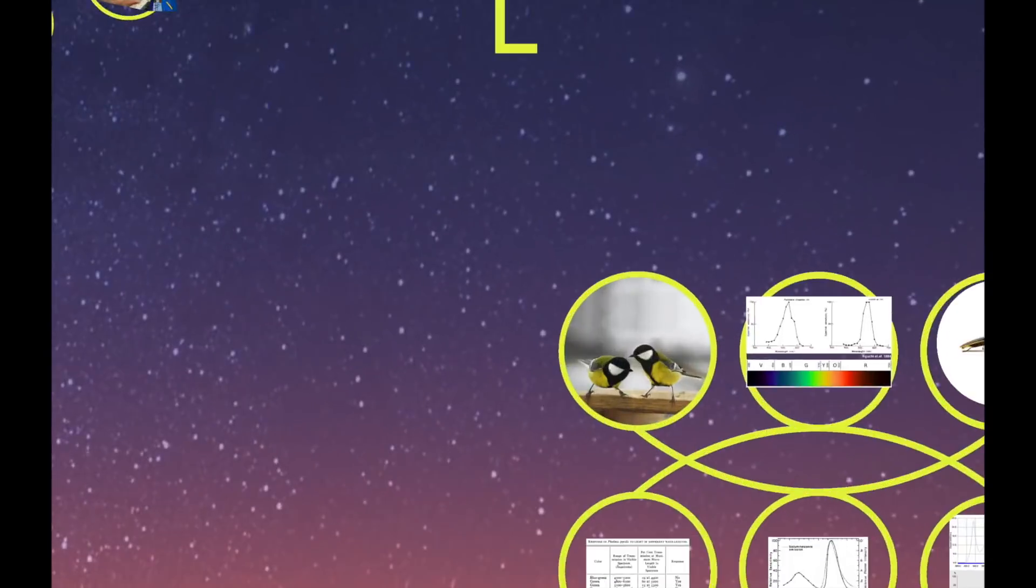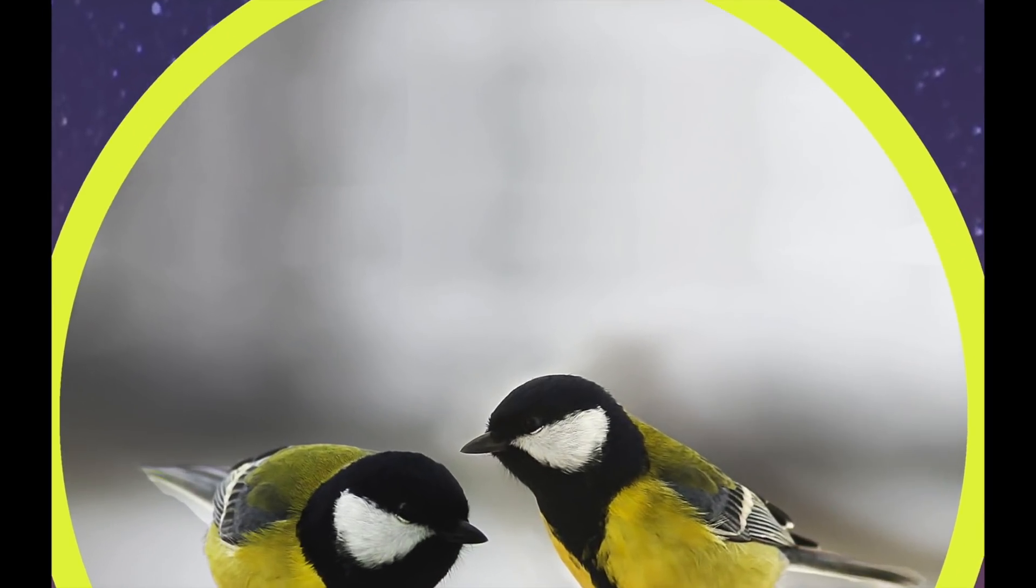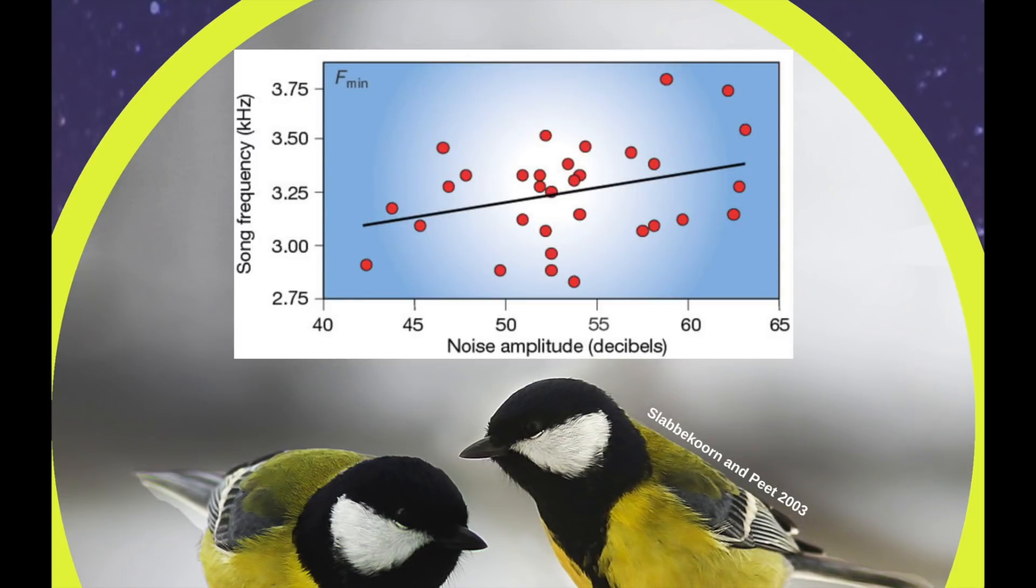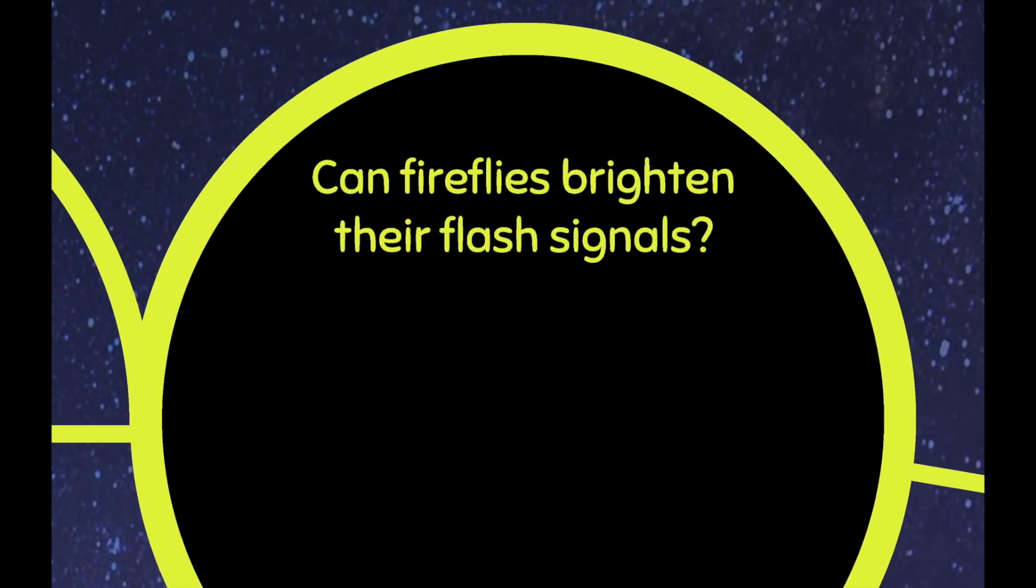Now bear with me for a second because I'm going to talk about birds. For a long time now we've known that songbirds in urban areas will actually sing more loudly to be heard over the sounds of cars and trucks. So they have a way of shouting to be heard over noise pollution. Now what I want to know is can fireflies shout to be seen over light pollution? Or in other words, can fireflies brighten their flash signals to maintain visibility against an illuminated background?